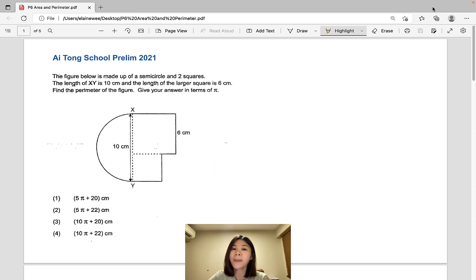Usually pi is given as 22 over 7, a fraction, or 3.14. Now sometimes, the question requires you to give your answer in terms of pi. That means we simply use pi, the symbol pi, to represent 22 over 7 or 3.14.